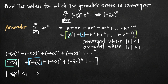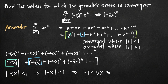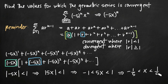The absolute value bars automatically eliminate the negative sign, so we're left with the absolute value of 5x is less than 1. Removing the absolute value bars gives us negative 1 less than 5x less than positive 1. Dividing each part of the inequality by 5, we get negative 1 fifth less than x less than positive 1 fifth.